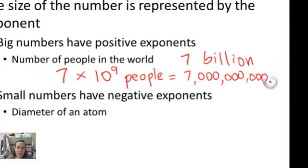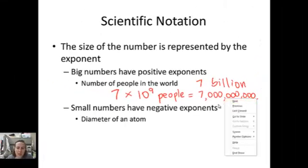Notice that the decimal point was moved 9 places to the left, and that's where we end up with this exponent of 9.